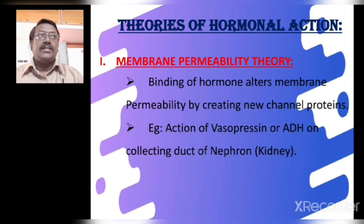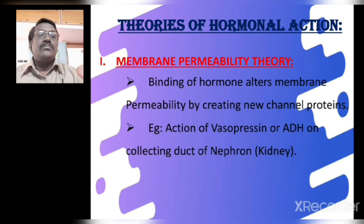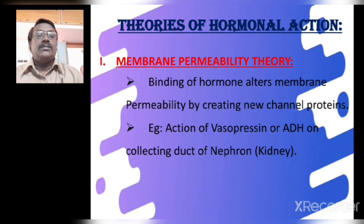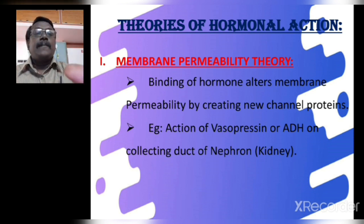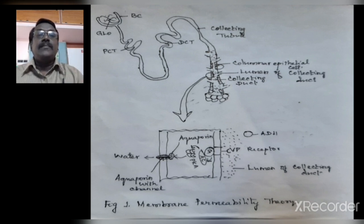Among the four theories, I am going to explain the membrane permeability theory first. This theory says that after binding of a hormone molecule — the so-called ligand — on the surface of the receptors, it alters the permeability of the plasma membrane of the target cell, and a new channel protein is formed. This new channel protein is meant for either removal or absorption of a particular compound, ion, or material from the cell or vice versa.